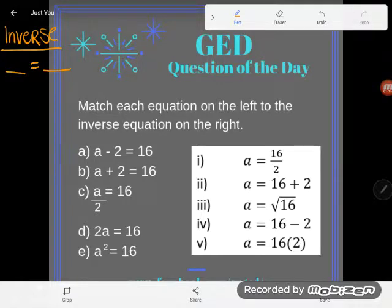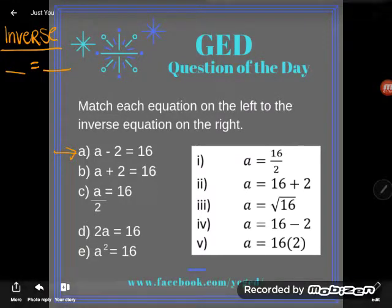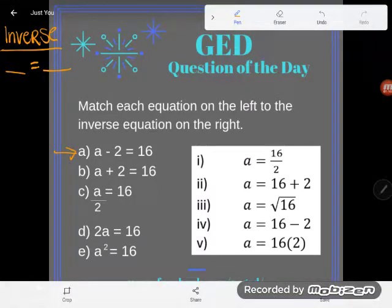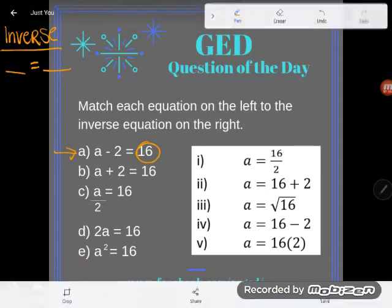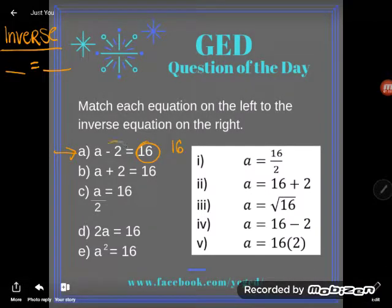So a says some number a minus 2 equals 16. I could think about that like a question mark and just ask myself, what number minus 2 equals 16? Or I could rewrite that as an equivalent equation. I could start with what used to be the answer—the number by itself—and say if I took that 16 and did the opposite of minusing 2...